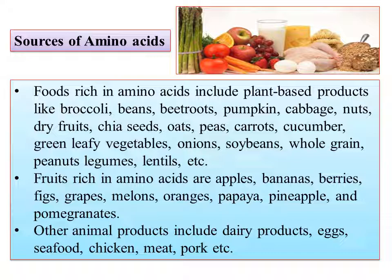More vegetarian protein sources include: nuts, dry fruits, chia seeds, oats, peas, carrots, vegetables, peanuts, and lentils. For Indian customers, almost all the food we have contains proteins.